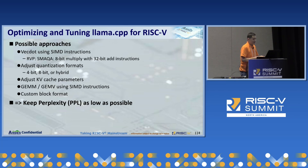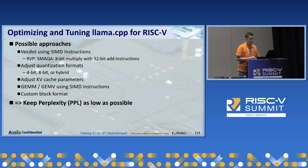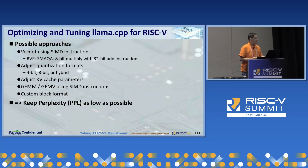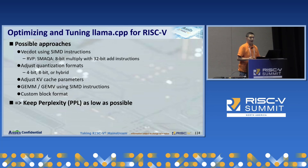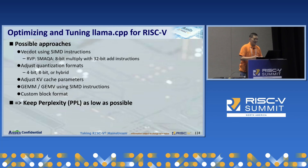No matter which method we use, it is important to keep perplexity as low as possible. Lower perplexity means better quality in generated text. llama.cpp provides a perplexity measurement program by default. From our experience, a slight perplexity rise is not noticeable, but if the perplexity goes too high, it probably means there is something wrong in our computation.